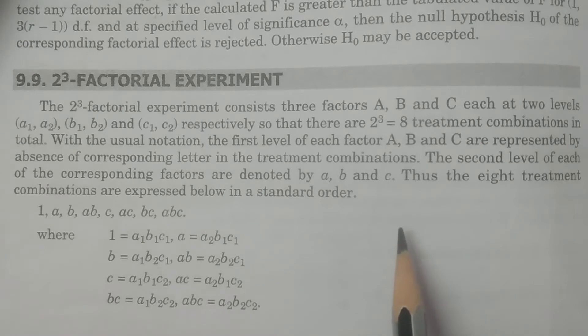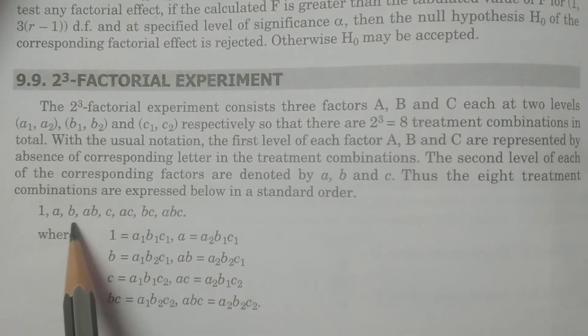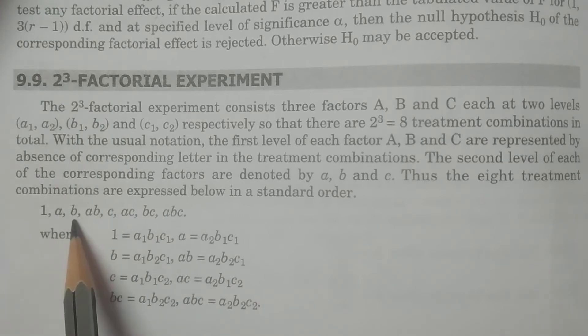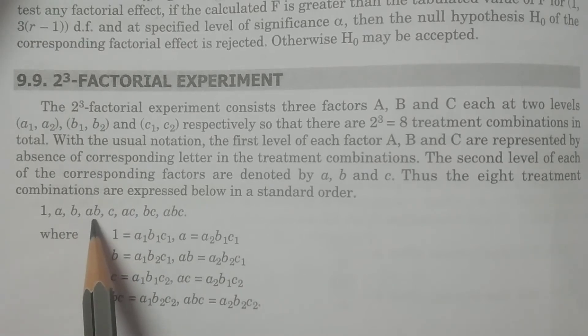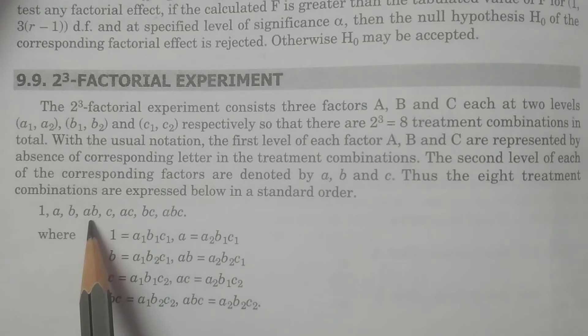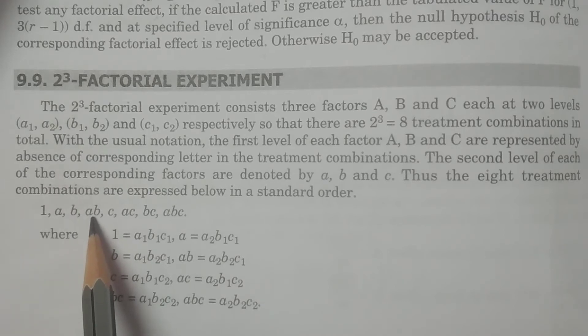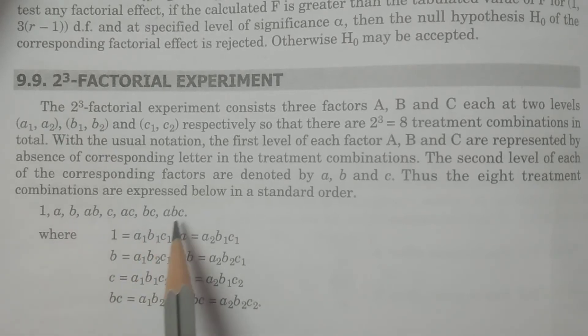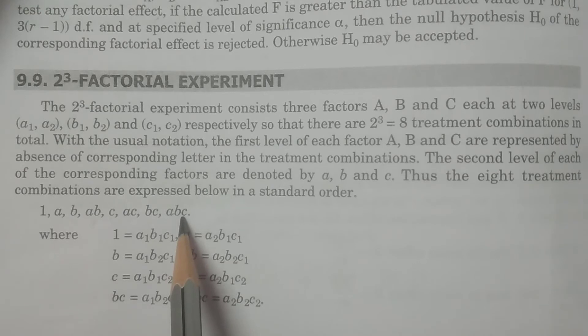So therefore, the 8 treatment combinations now is going to be expressed as 1, A, B, AB and then you see the order 1, A, B and then AB. That is interaction effect AB and C. C is going to be started here and then AC and then BC and then ABC. Last one, second order interaction effects that is ABC.